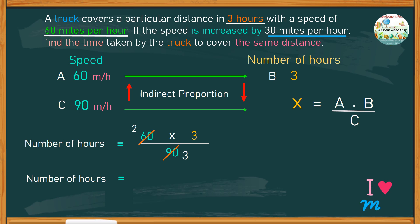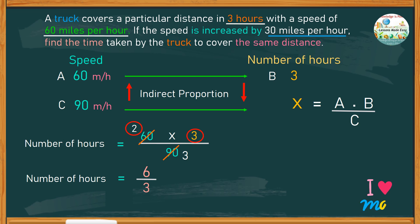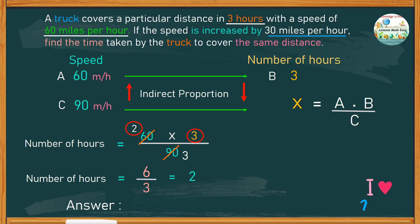Now we have much smaller numbers to multiply, which are 2 and 3, giving us a product of 6 over 3. To find the number of hours, just divide 6 by 3, which gives us a quotient of 2. The time required to cover the same distance with a speed of 90 miles per hour is just 2 hours.